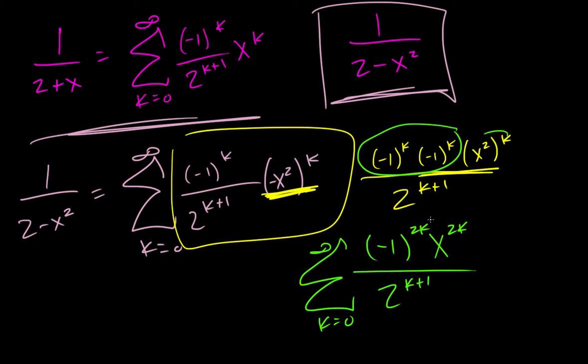Okay, and then since this is even, it's just always going to be equal to 1, negative 1 raised to an even exponent, so we can just kind of get that out of there.